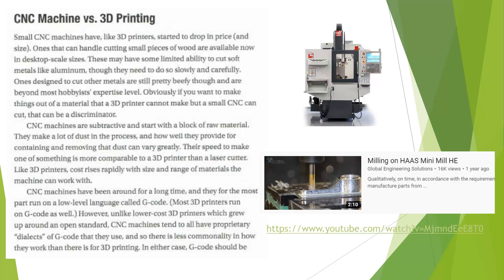What you see here is a Haas mini mill, and we have one of these at the Oakton campus. CNC machines are traditional manufacturing type devices. You put a piece of metal in the vise, and you program the cutting path for the tools. As the tool moves, it cuts and removes the part. So if we look at this YouTube video.